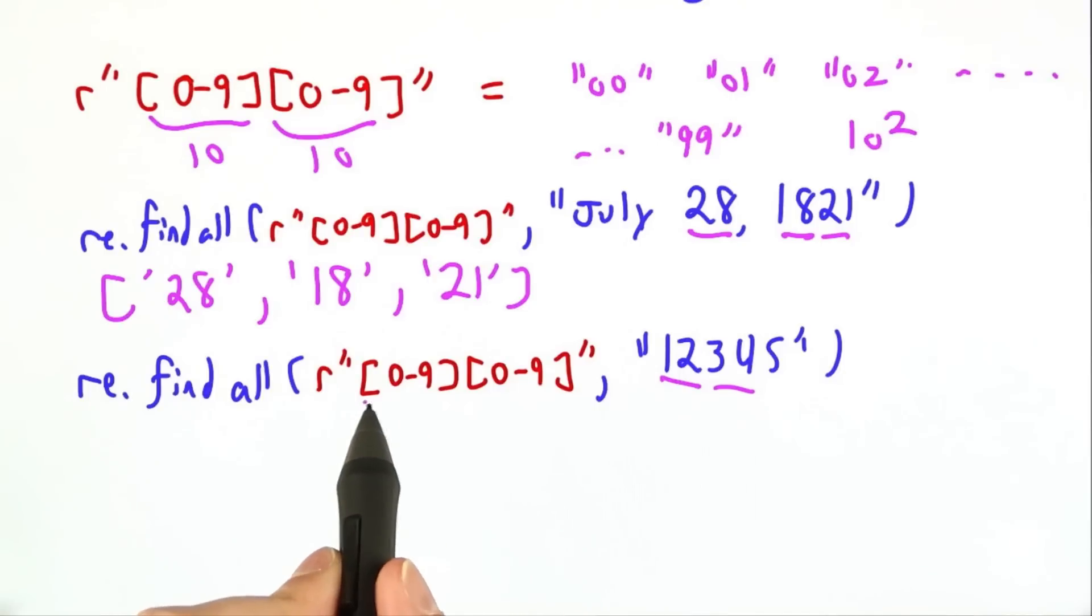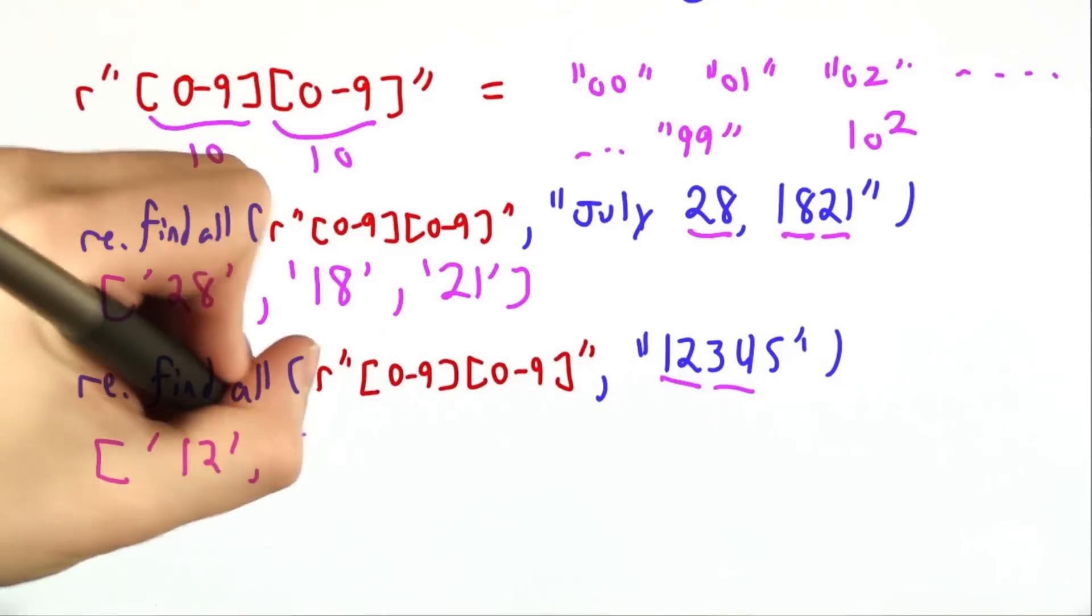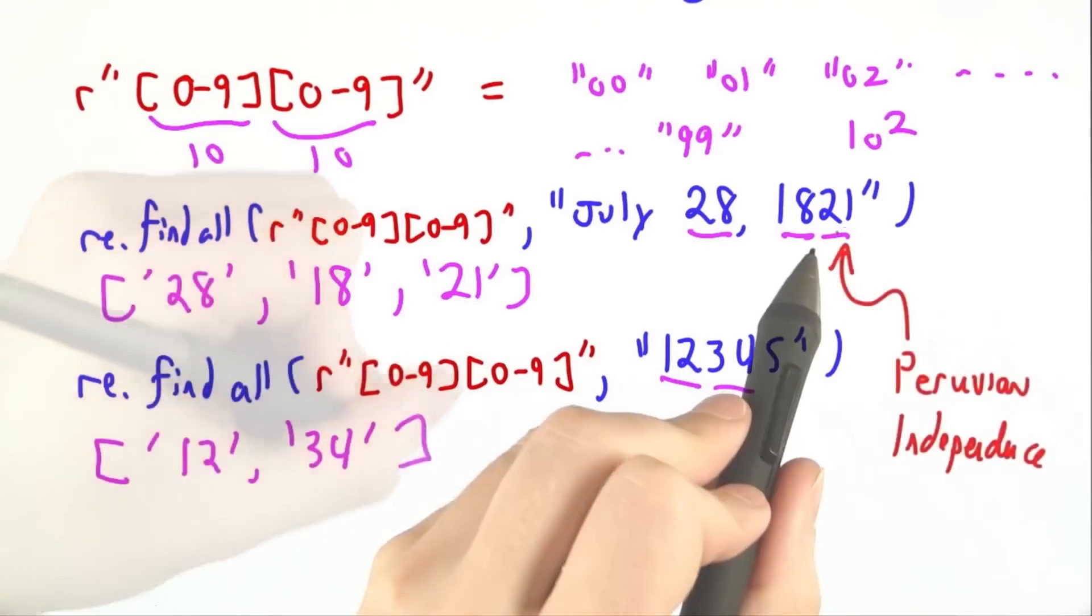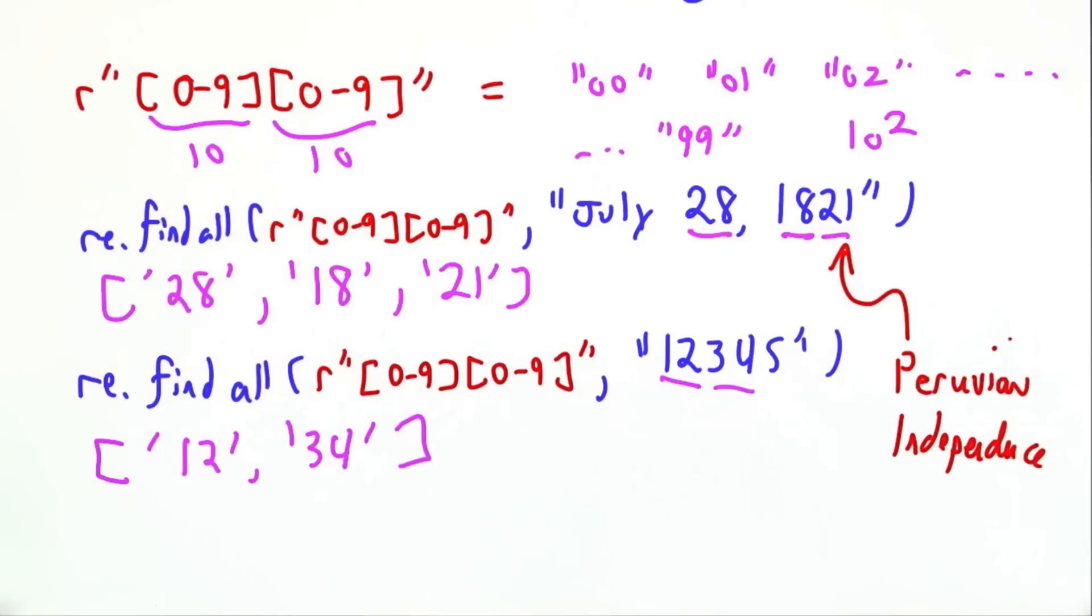This regular expression requires that both of its subparts be matched. July 28, 1821 is a good day for Peruvian independence.